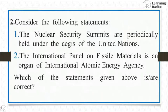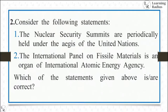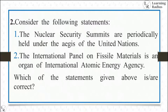Second question — consider the following statements: (1) Nuclear Security Summits are periodically held under the aegis of the United Nations; (2) The International Panel on Fissile Material is an organ of IAEA. Both statements are wrong — Nuclear Security Summits were not under the UN, and the panel is not an IAEA organ. The answer is 'neither one nor two.'